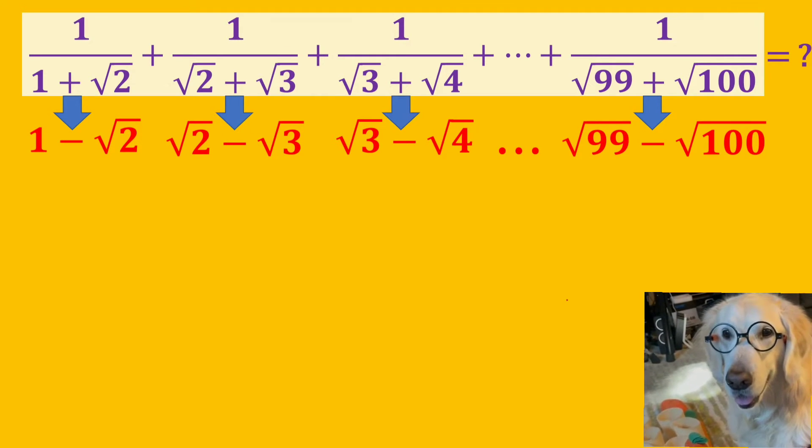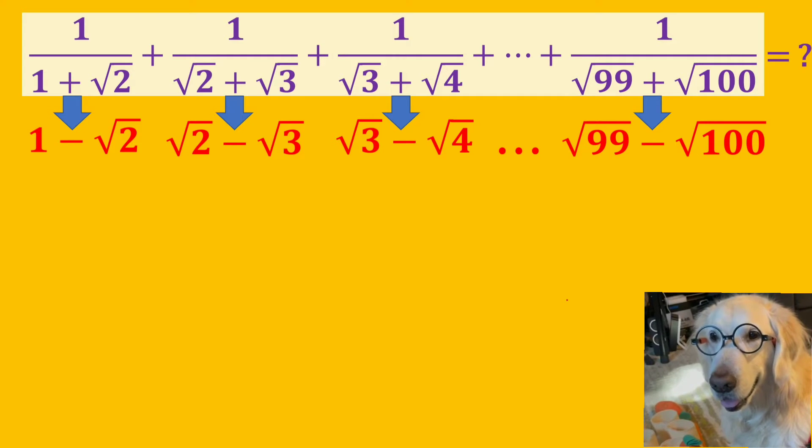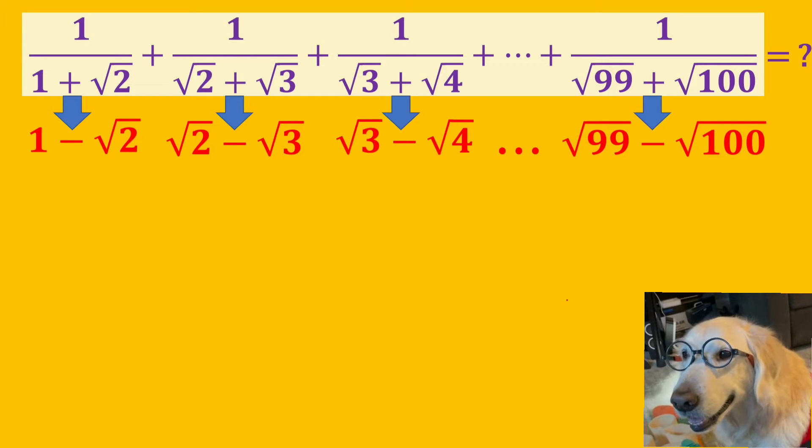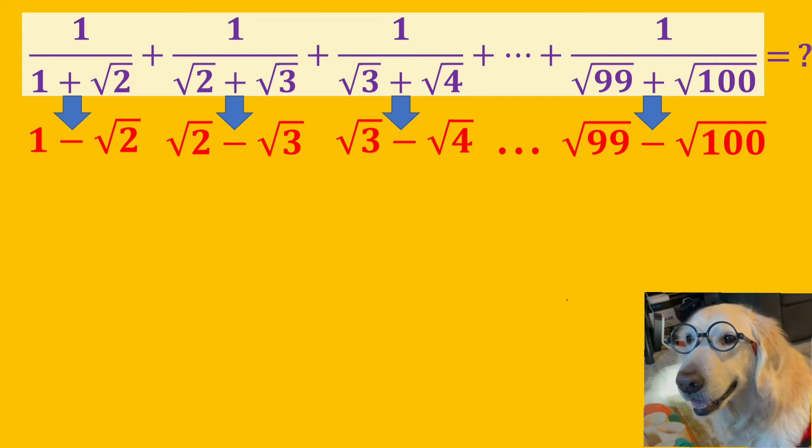Here, the denominators are radical numbers and we need to rationalize them. We will use the conjugate method. The conjugate is going to be the same two terms but with a different sign in between.